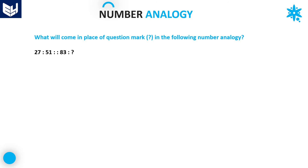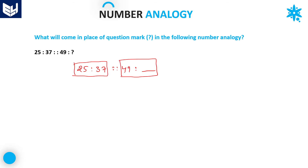Next question. Here the numbers are given as 25 is to 37 is to 49 is to blank. Here also, the first group of elements is given. In most cases, the first group elements are given and in the second group, the last or third element is not given. We have to find the logic. Whatever logic is applied for the first group, the same logic is applied for the second group.